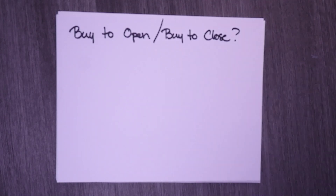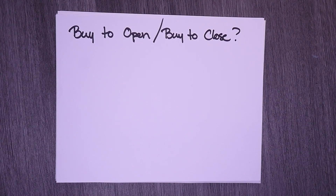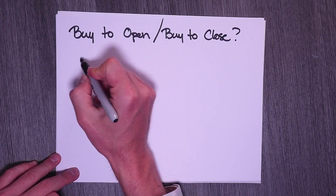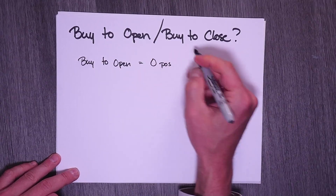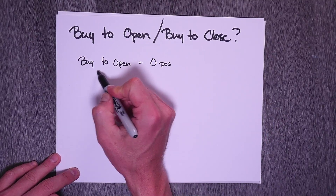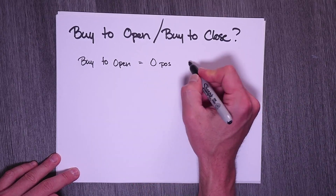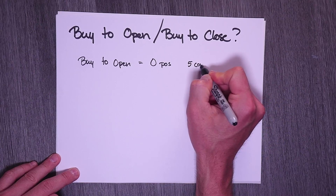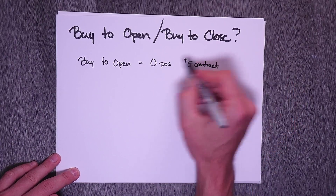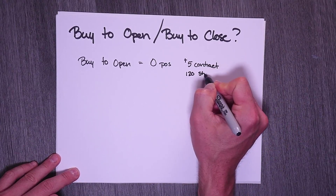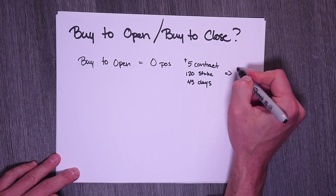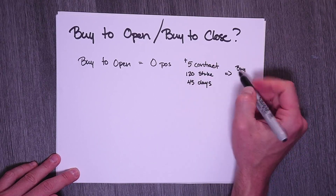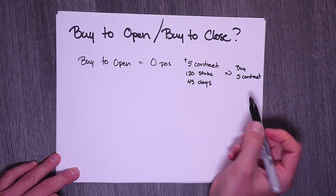Now, let me show you here on paper so you get an idea of how this functions. Buy to open — it doesn't matter which stock — buy to open means you have zero positions, zero contracts, zero shares. So if I buy to open, whether it's 100 shares or 100 contracts, buy to open — let's say five contracts at the 120 strike, 45 days out. Once you complete this order, you will be buying to open and you will get five contracts at the 120 strike, 45 days out.